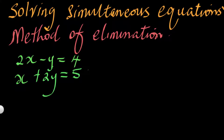I have already explained how to solve simultaneous equations using the method of substitution. Now I'm going to use another method, which is the method of elimination. I can use this method when I have two linear equations that I have to solve simultaneously. We are eliminating one of the variables — I can choose to eliminate y or I can choose to eliminate x.